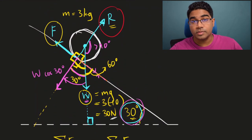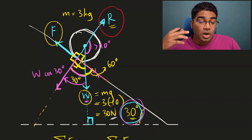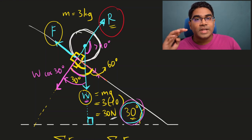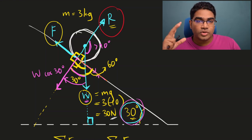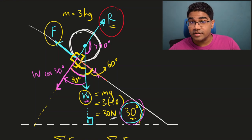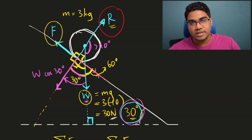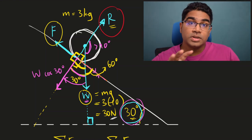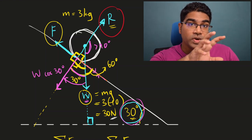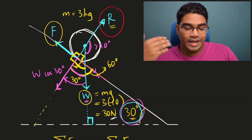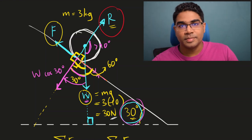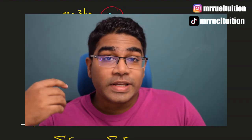This is how we find the normal reaction and friction using forces in equilibrium. The key concept is that as long as the object is not accelerating, the resultant force is zero, so the sum of forces in any two opposite directions must have equal magnitude. This also works if the object is moving down the slope at constant velocity — the calculation would be exactly the same.